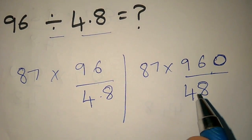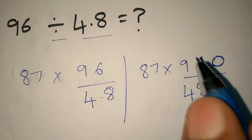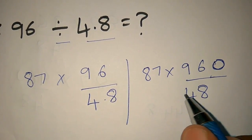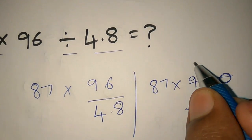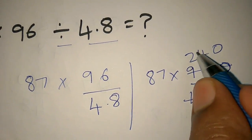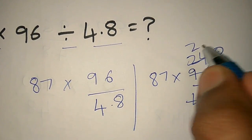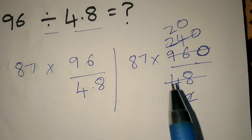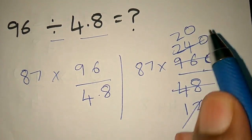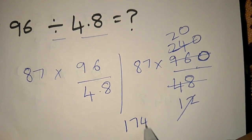We can cancel the numbers here. We will do 4 table: 12, 24, 240. So again we will do 20. Now 87 into 20, we will do 174.